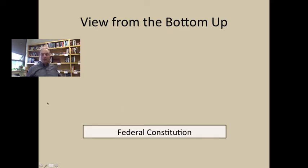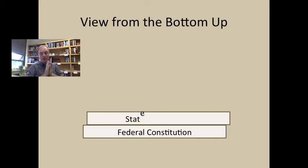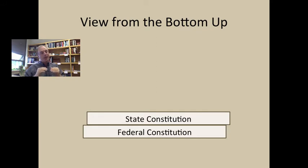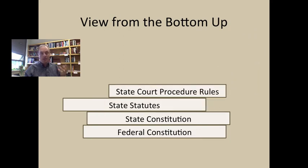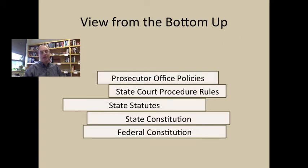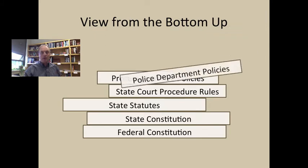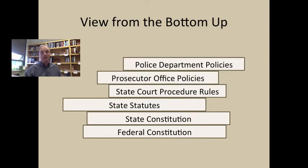You could also approach this source question by viewing it from the bottom up. You could start with the federal constitution and say that creates a floor — these are the requirements that all agents must follow and you can't go below this. On top of that, for state actors, the state constitution might require something more. The Maryland constitution, for example, could be interpreted in a way that requires something more of agents in Maryland than would be required by the federal constitution. Then there are state statutes that can add requirements on top of the state constitution. There are state court procedure rules adding on top of the state statutes, and prosecutor office policies and police department policies can add some additional requirements as well.